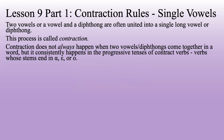Contraction does not always happen when two vowels or diphthongs come together in a word, but it consistently happens in the progressive tenses of contract verbs, which are verbs whose stems end in alpha, epsilon, or rho. We've talked about contraction a little bit here and there before as we've been studying other things.